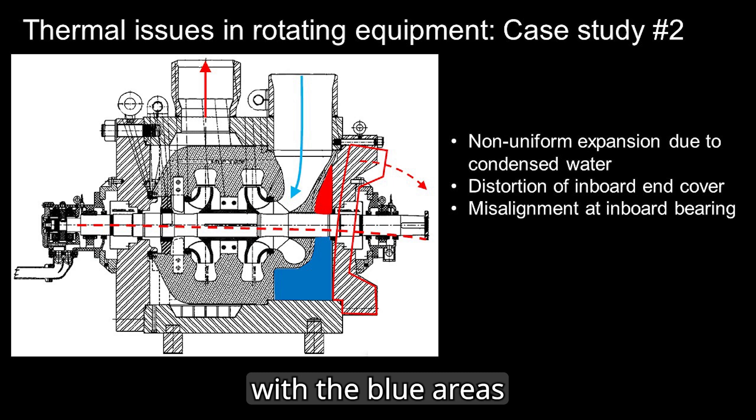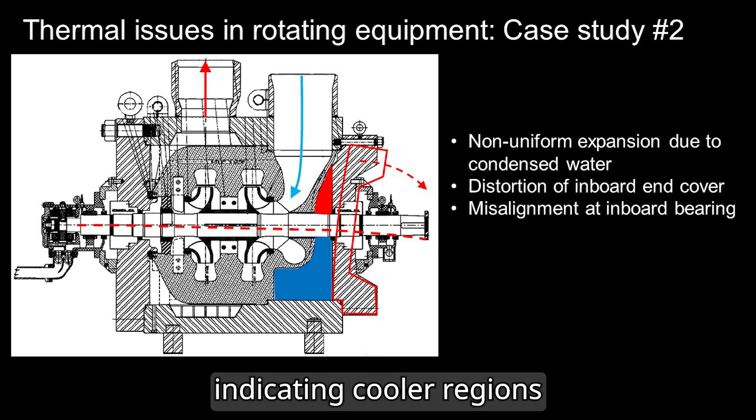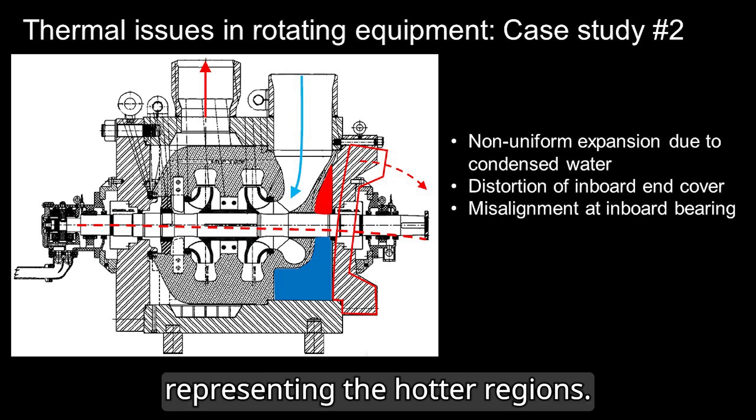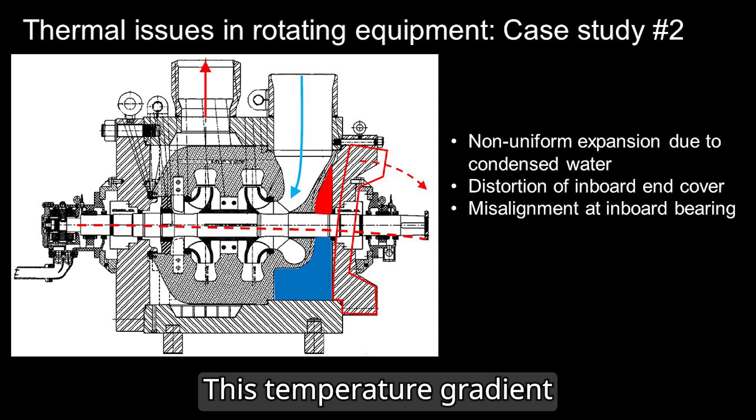The figure shown here illustrates this, with the blue areas indicating cooler regions and the red areas representing hotter regions. This temperature gradient causes the housing to bend, resulting in misalignment.